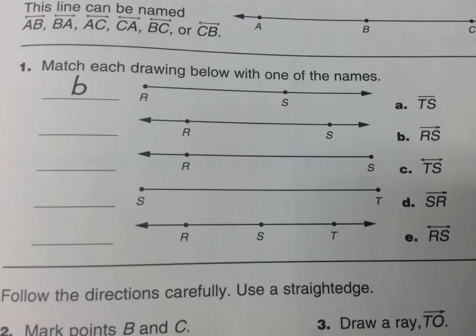Let's quickly have a look at Homelink 6.1 for third grade everyday math. And the first part here, we need to match each drawing below with one of the names. So the first one you can see is ray RS, which they've matched here.